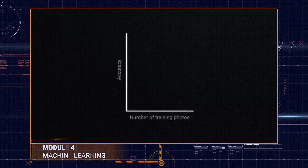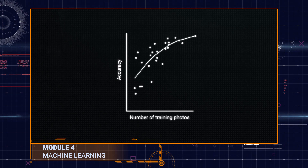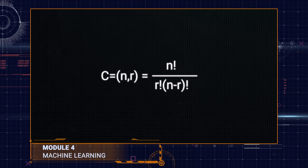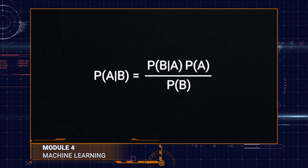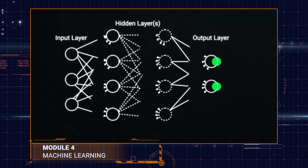Module four covers machine learning, which allows computers to repeatedly produce accurate results. You will take a deeper look into permutations and combinations, probability, statistics, and backpropagation.